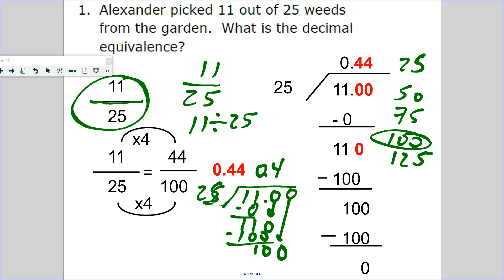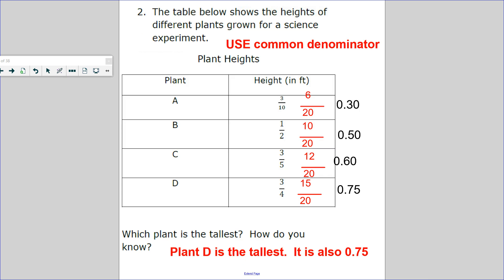So it's 44 hundredths. Number two: the table below shows the heights of different plants grown for a science experiment. There are many ways you could have done this.